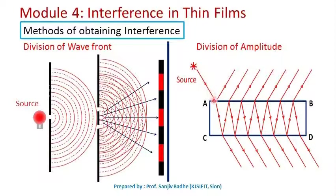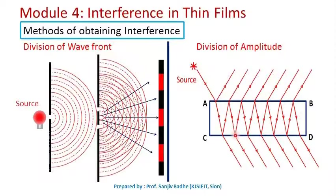In the division of amplitude method, a single light wave is made incident on the upper surface of the thin film, which has refractive index mu. This light ray is partially reflected back into the air and partially refracted into the film. On the lower surface, there is again partial reflection and partial refraction. As the ray reaches the upper surface again, there is partial refraction and partial reflection, and at the lower surface partial refraction and partial reflection once more. After multiple partial reflections and refractions, we get a number of rays in the upper and lower parts.